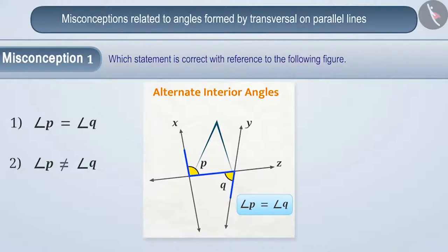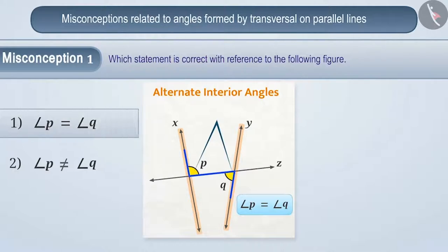Some children memorize that alternate interior angles are always the same. In the given figure, they ignore that line X and line Y are not parallel, and assume that the alternate interior angles — angle P and angle Q — are equal. In both these situations, they choose option 1 as the answer. But this is a wrong answer.